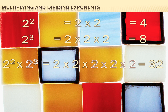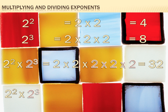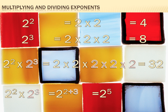Now that's interesting. There are five 2's, and I've got 2 to the second power times 2 to the third power. If I add 2 plus 3, I get 5 — five 2's. So 2 squared times 2 cubed equals 2 to the 2 plus 3 power, which equals 2 to the fifth power, and that equals 32.